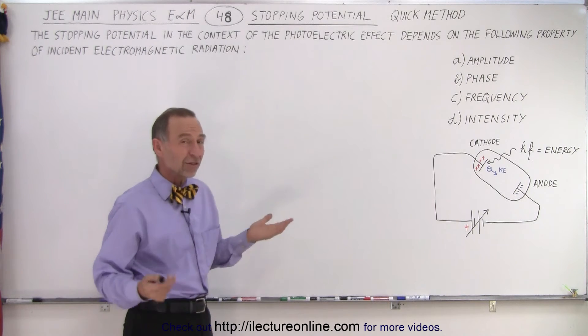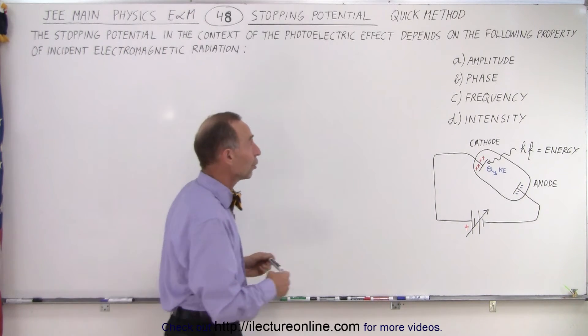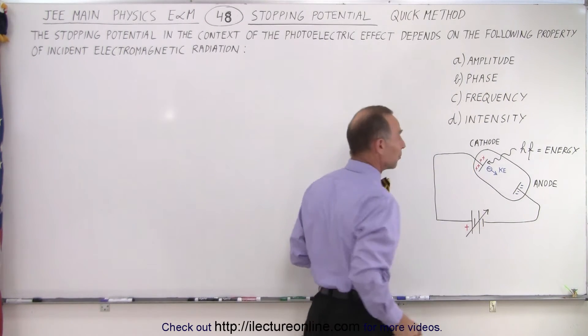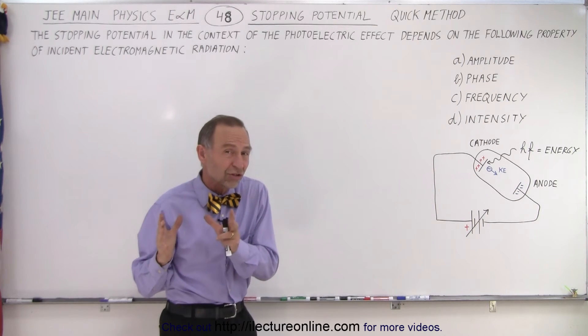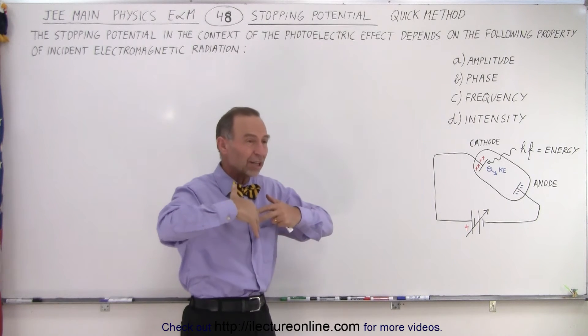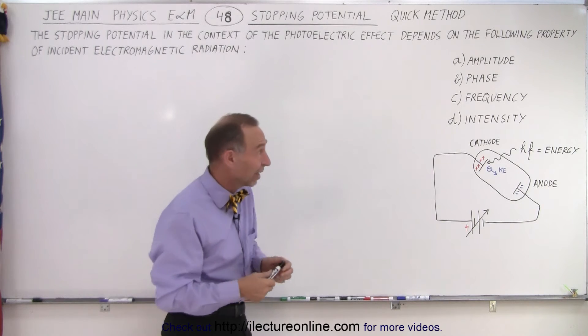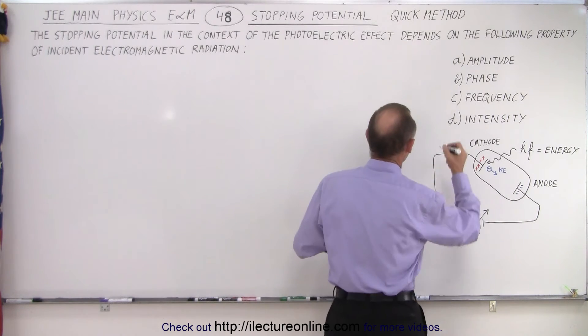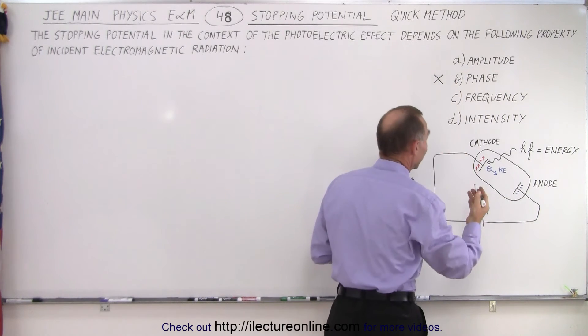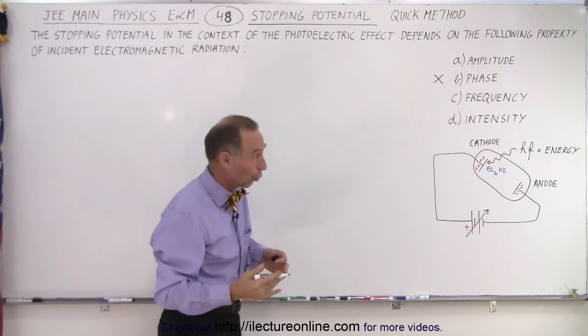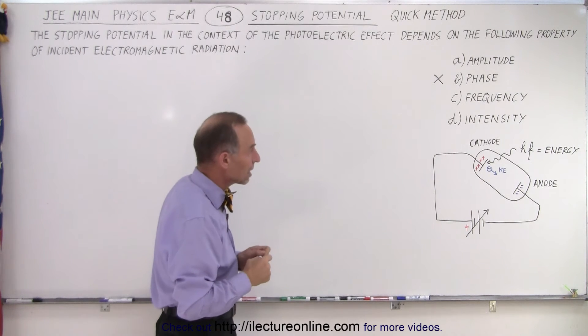But let's look at all the possible answers and see if we can eliminate them. First of all, the phase of the electromagnetic radiation. The phase just changes things in time, doesn't change anything about the intensity or the frequency or anything else. And so since it's only changing things in time, the phase cannot have an effect on the stopping potential or the energy given to the electron.